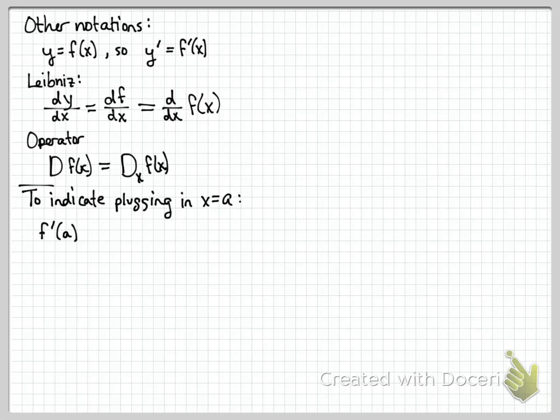f prime of a means plug in the x value a into your derivative. And another way to write that if you're using these other notations is to do a vertical line and then at the bottom of it write x equals a. That means evaluate this function at x equals a, or plug in x equals a. So that was some notation. I just want you to be able to recognize it.